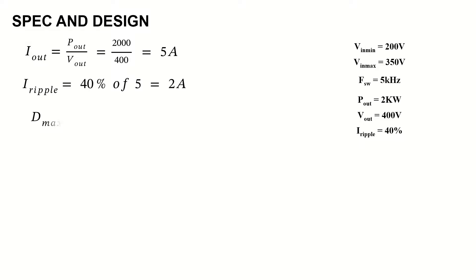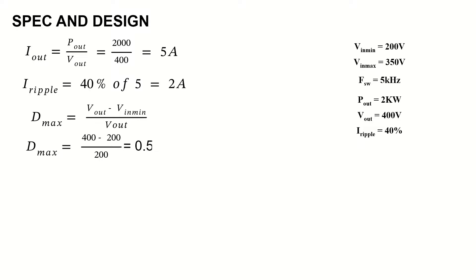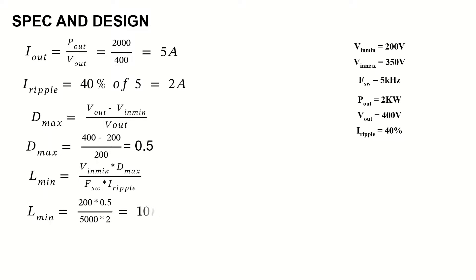Maximum duty ratio D_max is given by (Vout minus Vin_min) divided by Vout — that is (400 minus 200) divided by 400 — which gives D_max = 0.5. The minimum inductance value is given by L_min = (Vin_min × D_max) / (switching frequency × current ripple) = (200 × 0.5) / (5000 × 2), which gives a minimum inductance of 10 mH.